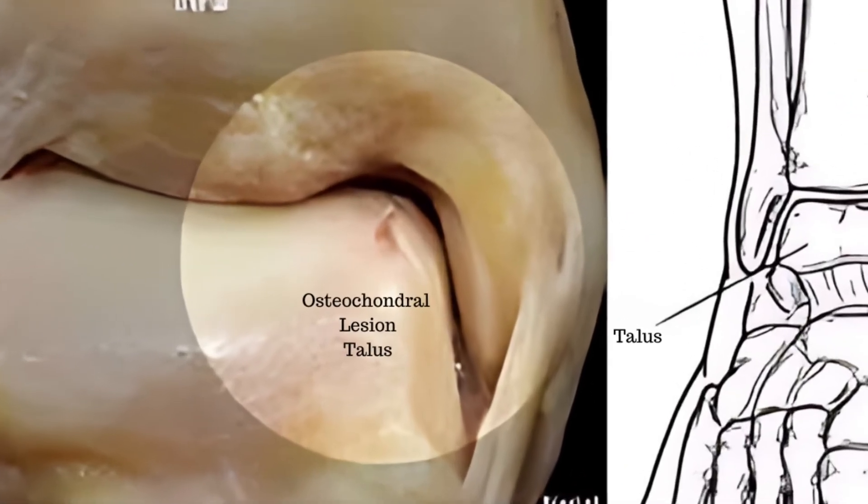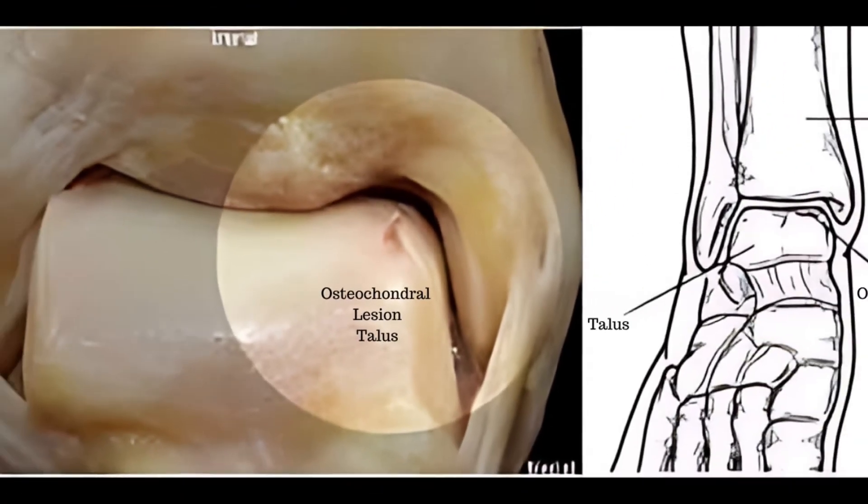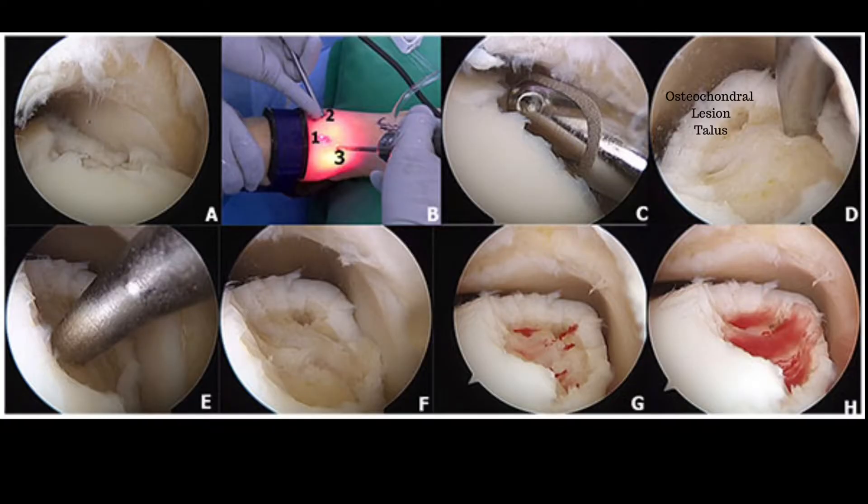Another cause of deep pain within the ankle joint is an osteochondral lesion to the talus — a slight tear or lesion within the cartilage of the talus bone. Symptoms are similar to anterior ankle impingement, but the main difference is that anterior ankle impingement feels quite superficial, while patients describe an osteochondral lesion as a deeper pain within the ankle joint that they can't touch. Treatment includes strengthening and stabilising exercises for the ankle, and patients also benefit from an ankle heel lift.